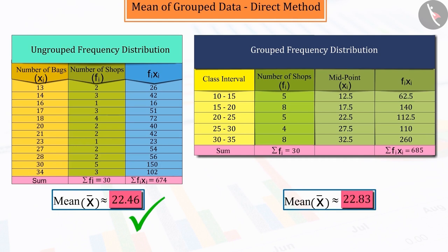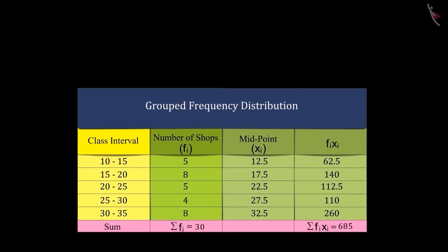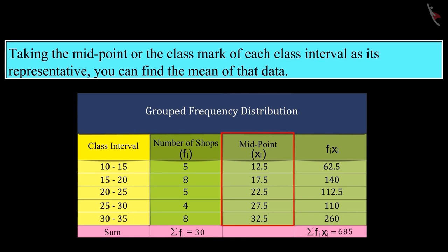While 22.83 is an approximate mean. Similarly, by converting any ungrouped data into grouped data and by taking the midpoint or the class mark of each class interval as its representative, you can find the mean of that data.